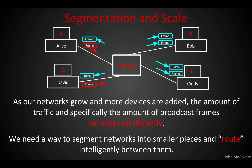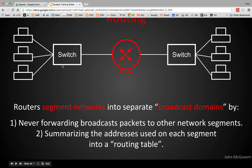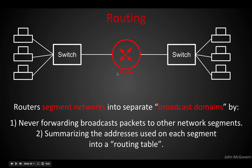As our networks grow and we add more and more devices — into the hundreds or thousands — the amount of traffic related to broadcast frames is significant because each broadcast packet has to go to each computer. So we need a way to break up broadcast domains and limit how far broadcasts go. To do this, we'll insert a piece of gear called a router. Routers segment networks into separate broadcast domains: they don't forward broadcast packets onto other networks, so a broadcast on the left side won't be heard on the right side of the router — it divides that broadcast domain in half.